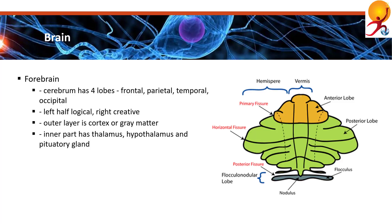The cerebrum has four lobes: the frontal lobe, parietal lobe, temporal lobe and occipital lobe. The cerebrum also has right and left halves called hemispheres, which are connected in the middle by a band of nerve fibers known as the corpus callosum.